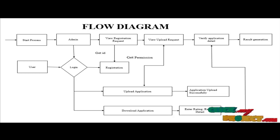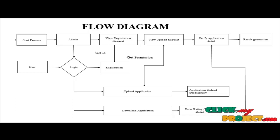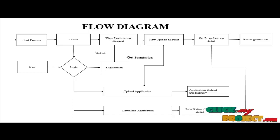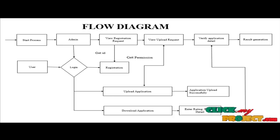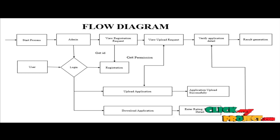In that process, we separate admin processes and user processes. If the user is an existing user, they should go directly to login. Otherwise, if you are a new user, you should register in this portal, and during the registration process, you should get an ID from the admin. After you get your ID, you can log in. The user can perform two processes: upload an application to the server, or download an application from the server.